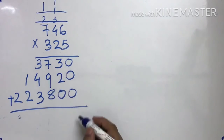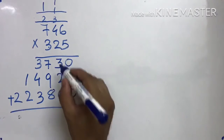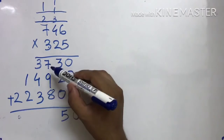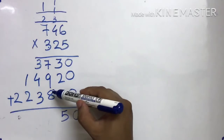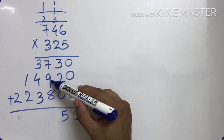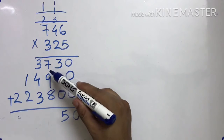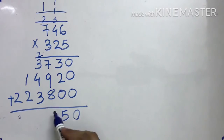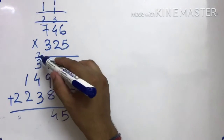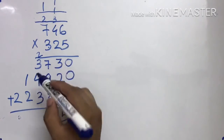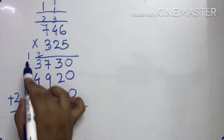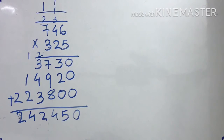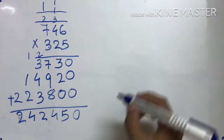Abhi addition karna hai. 0 plus 0 plus 0 = 0. 3 plus 2 = 5. 5 plus 0 = 5. 8 plus 9 = 17. 17 plus 7 = 24. 3 plus 2 = 5, 5 plus 4 = 9, 9 plus 3 = 12. 1 plus 1 = 2, 2 plus 2 = 4, and 2. So this is how we can do multiplication by 3-digit numbers. 1 more.